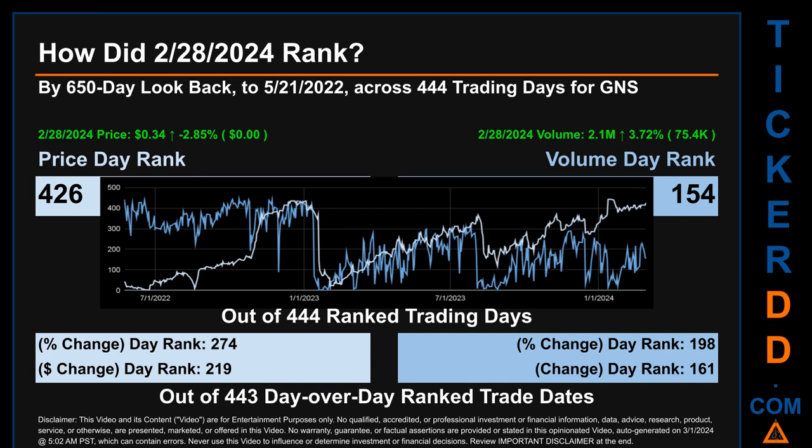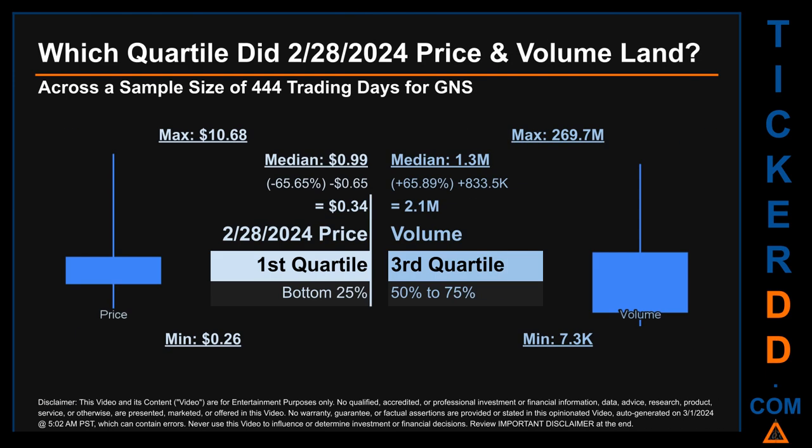In this view, the dips are good whereas the spikes are bad. The price's day-over-day percentage change of minus 2.85% on February 28, 2024 had a day rank of 274, while its dollar difference of $0.00 had a rank of 219 when compared day-over-day across 443 trading days. Volume's percentage change and difference were ranked respectively at 198 and 161.